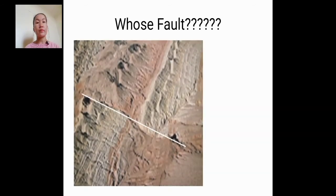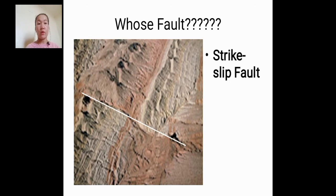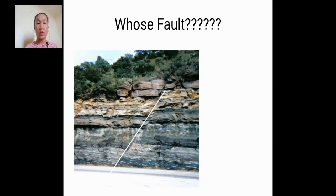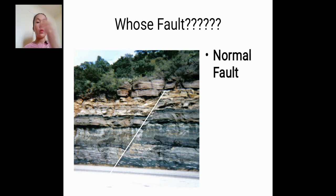Next one — this is not an inclined fault, kaya ito ay strike-slip fault. Okay, next — another inclined fault. Gamitin ulit natin yung kamay natin, isunod natin yung pattern sa picture — itong part na ito sa picture ay bumaba. So ayan ay normal fault kasi yung hanging wall ay bumaba.